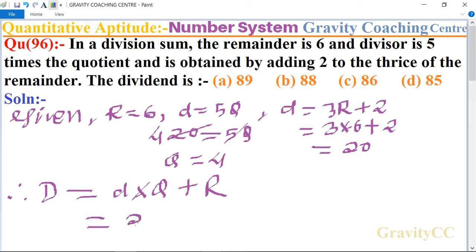The divisor is 20 and quotient is 4, plus remainder is 6. So 20 × 4 = 80, plus 6 equals 86, which is the required answer.